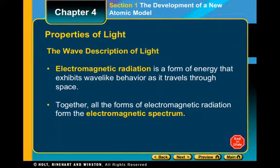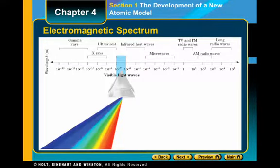So electromagnetic radiation is a form of energy that exhibits wave-like behavior as it travels through space. So anything that is a wave that travels through space. It does not need a medium. So that can be visible light, it can be radio waves, gamma waves, and anything in between. And putting these all together forms the electromagnetic spectrum, which this is a picture of the electromagnetic spectrum.